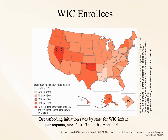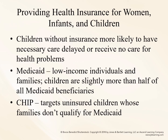Here are the breastfeeding initiation rates by state for WIC infant participants aged 6 to 13 months; lighter states have less breastfeeding and darker states have more. All children deserve access to comprehensive health services that provide preventative care when well and treatment when ill or injured. Health insurance provides access to critical preventative medical services as well as acute care. Children without health insurance are much more likely to have necessary care delayed or receive no care, putting them at greater risk for hospitalization. Providing health insurance to low-income children is therefore a critical health care safety net.